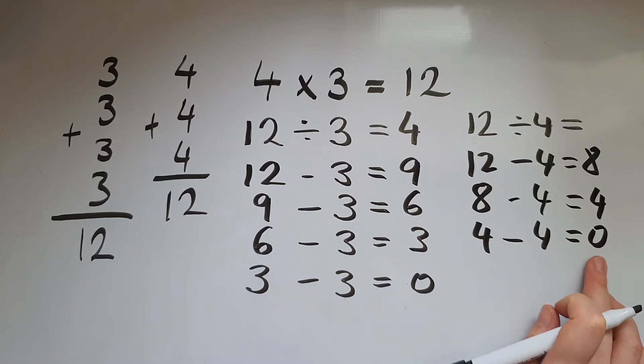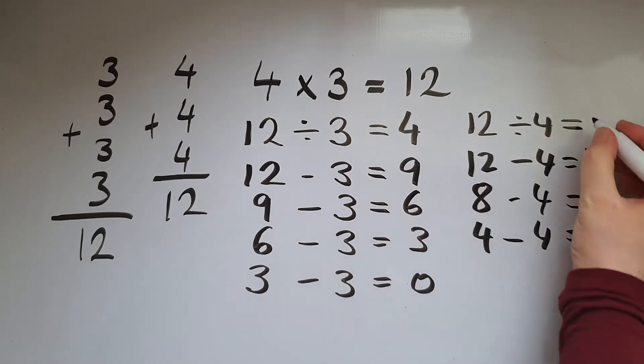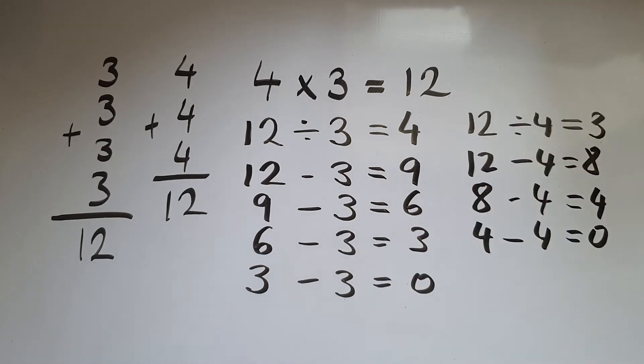So we've got to come to a point where we've got 0 as a final answer. So we've got 1, 2, 3 lots of 4, so 12 divided by 4 gives me 3.